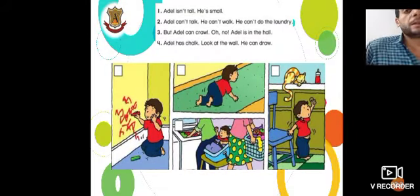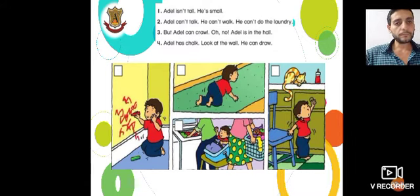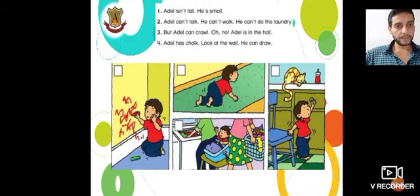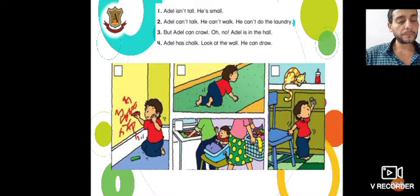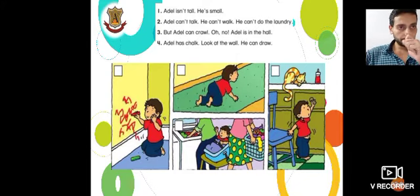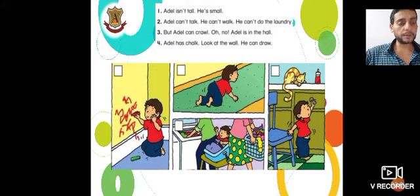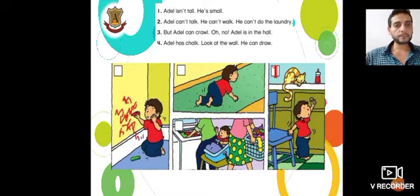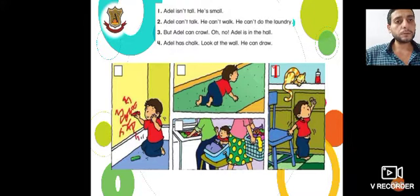Listen to me carefully. Sentence one: Adel isn't tall, he's small. Which picture expresses the sentence? The answer is picture number one. Sentence two: Adel can walk — he can talk, he can walk, he can do the laundry. Which one of them?